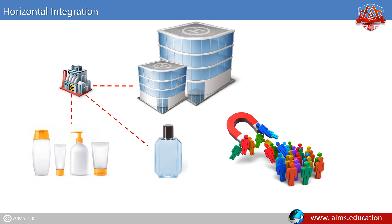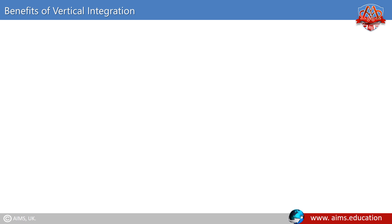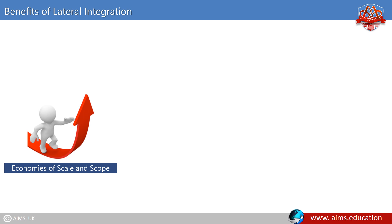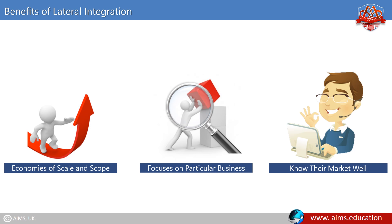The primary benefit of vertical integration is control — no dependency for components or services, and operations can be synchronized with other company functions. The benefits of lateral integration are that they achieve economies of scale and scope, they focus entirely on a particular business so they develop more expertise, and they know their market well.